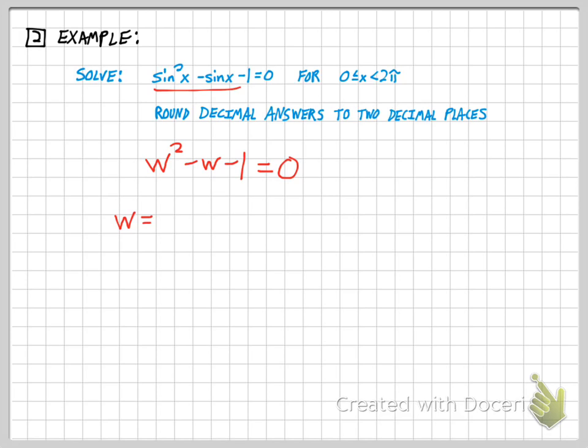And so hopefully you can remember the quadratic formula. The way to solve is going to be negative b. So that's going to be 1 plus or minus the square root of b squared, which is also 1, minus 4 times a times c. Alright, all over 2a. Alright, simplify that a little bit and you end up with 1 plus or minus the square root of 5 all over 2.